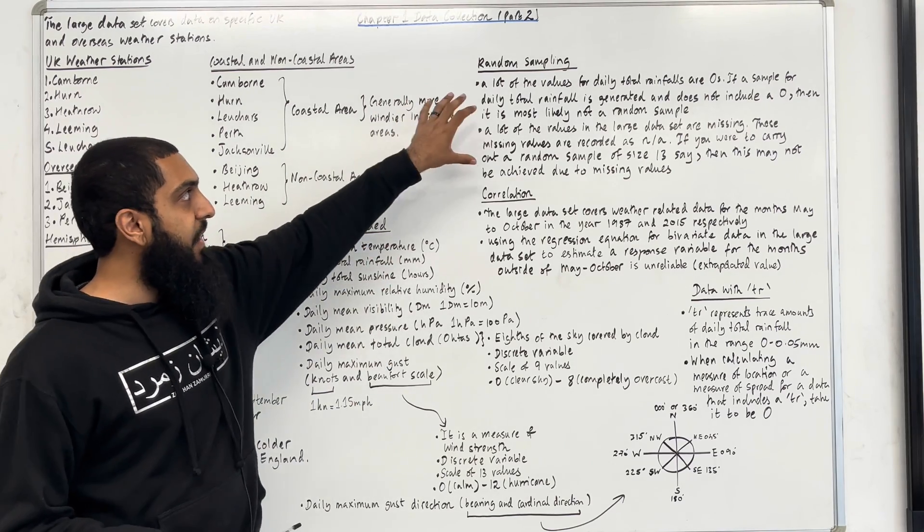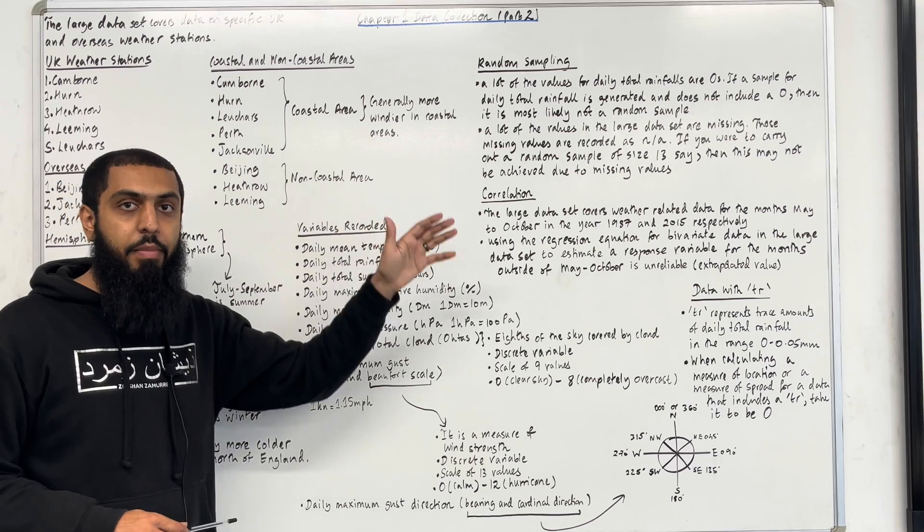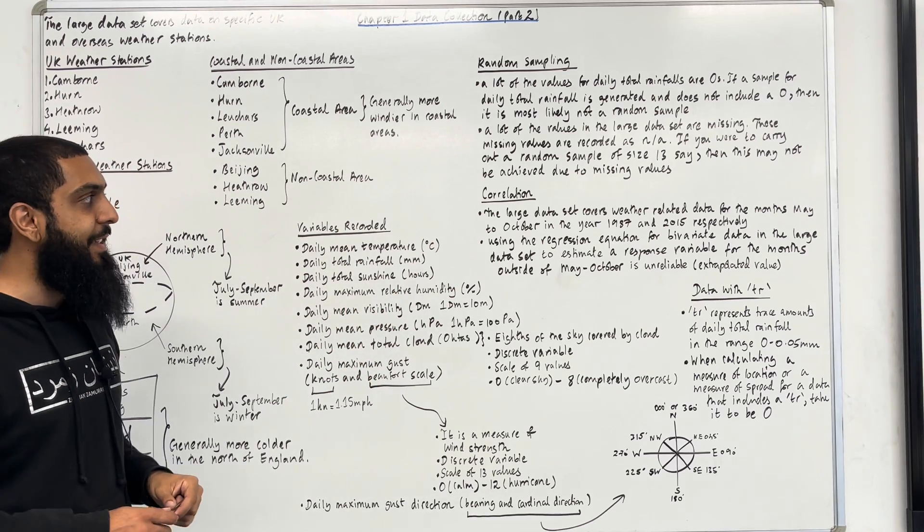These are the two key facts that you need to know about the random sampling process involving the large data set.